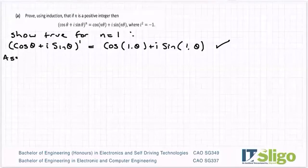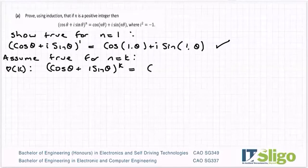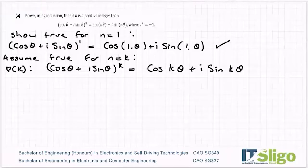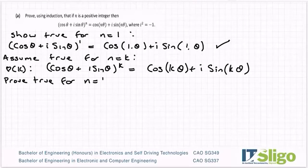Assume true for n = k. So my P(k) then becomes (cos θ + i sin θ)^k = cos(kθ) + i sin(kθ). That is what De Moivre's theorem is telling me for the case where n = k. There isn't a whole lot I can do with that for now, so let's go ahead and prove true for n = k + 1.